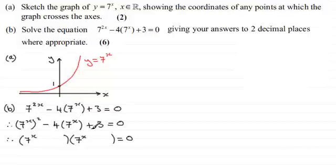And then we're looking for two numbers that multiply together to give us plus 3. And that would be in this example minus 3 and minus 1. Because if you put minus 3 and minus 1 in here you need to check out that it gives us minus 4 times 7 to the power x. And indeed it does. You've got 7 to the power x times minus 1 is minus 7 to the power x. And here you've got minus 3 times 7 to the power x. Add those two together you've got a total of minus 4 multiplied by 7 to the power x.